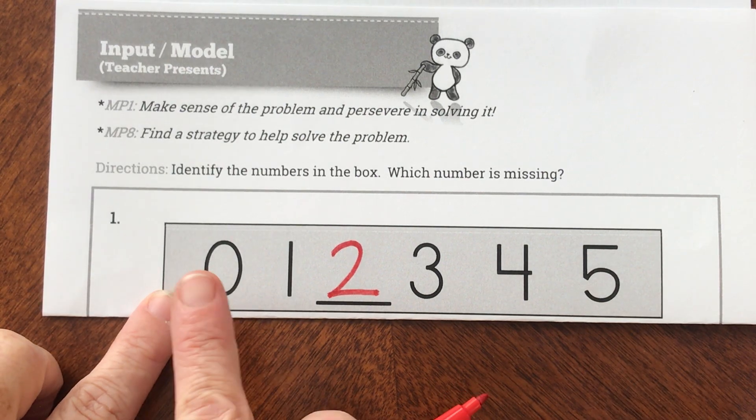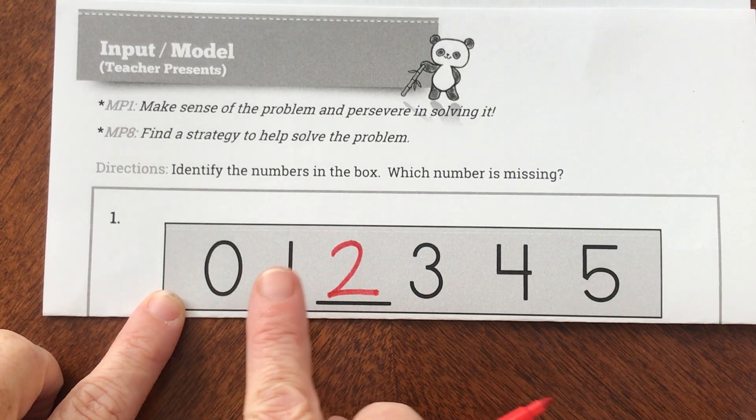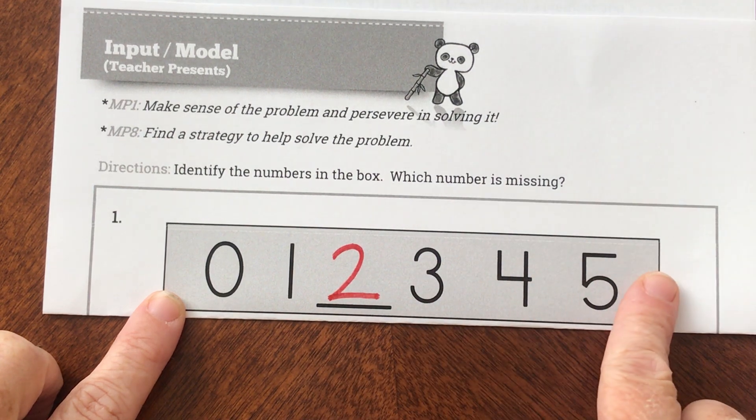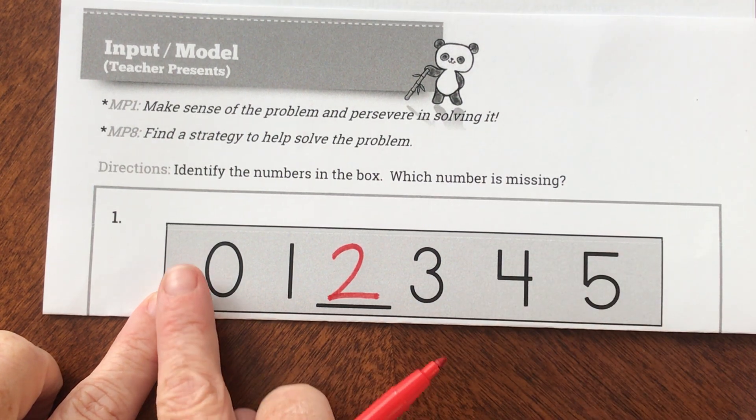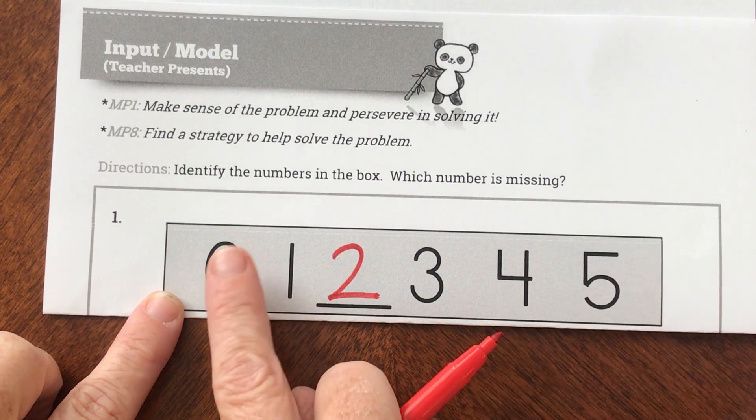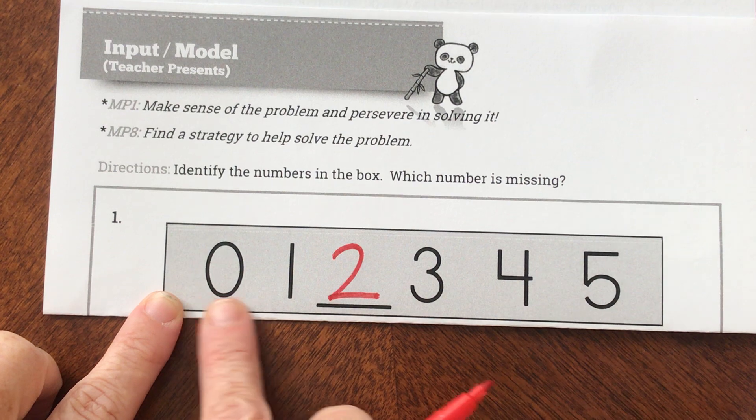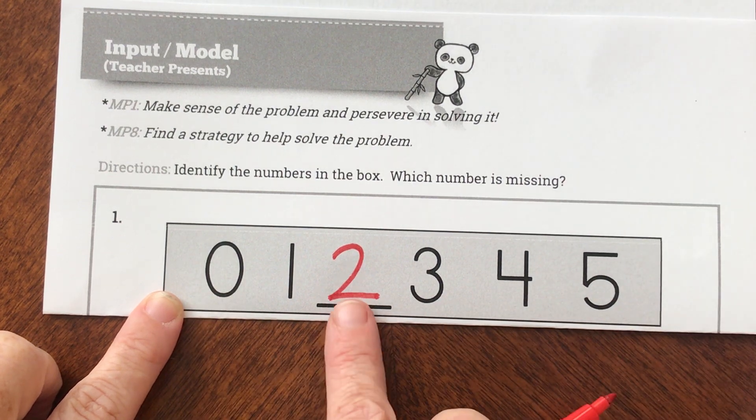I know that zero, one, two, three, four, five. I could check it and say it one more time: zero, one, two, three, four, five. This is called counting on. When we start small and count larger, we call that counting on, and we want to fill in the missing blank.